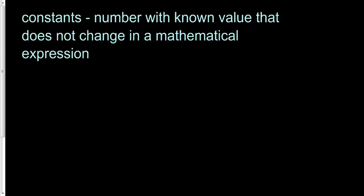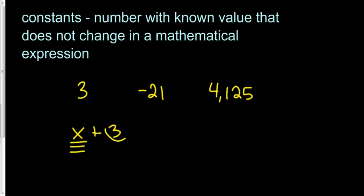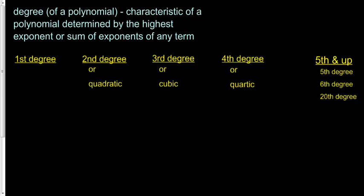Constants, if you need to remember, are just numbers. So 3 would be a constant, or negative 21, or 4,125. When we look at constants inside of a polynomial, like x plus 3, x is a variable, but 3 would be our constant. It's a number that's basically by itself. It's not going to be changing in that mathematical expression.